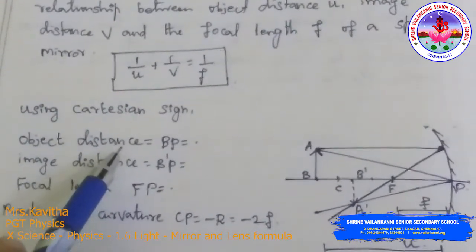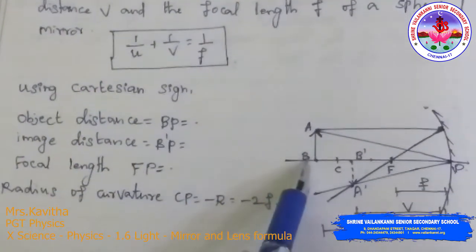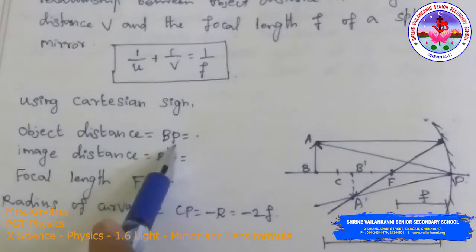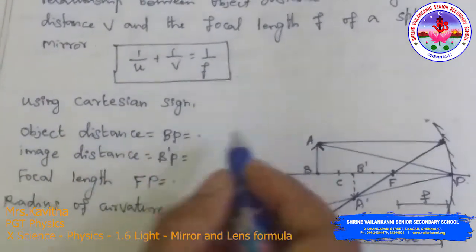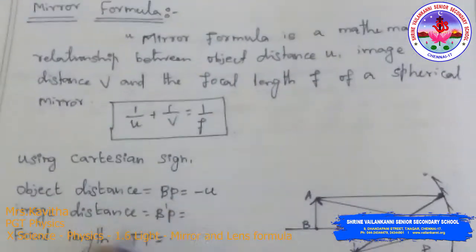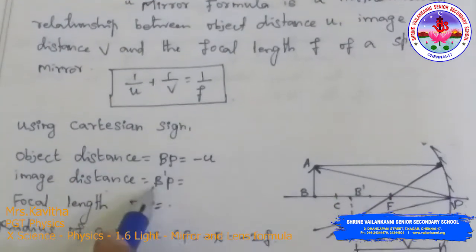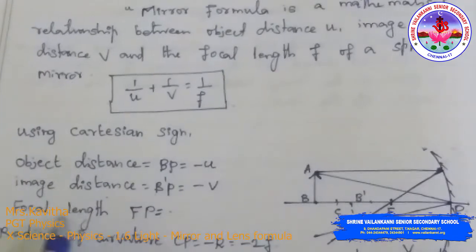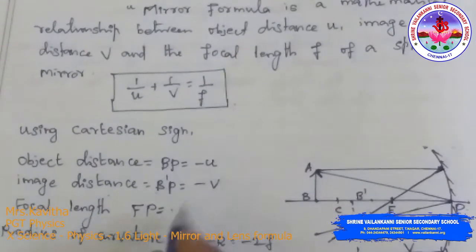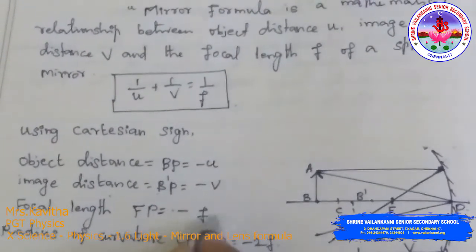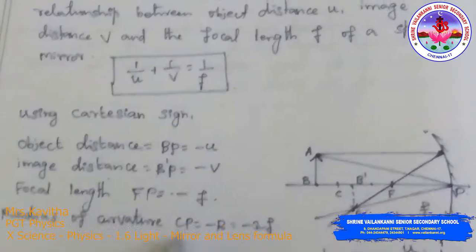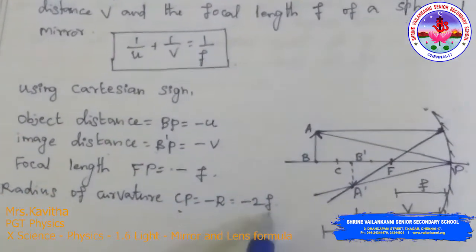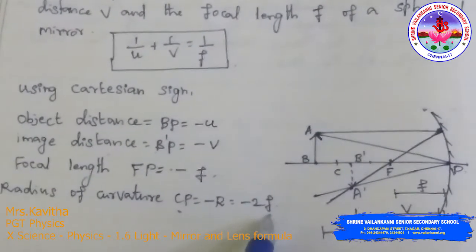By using the Cartesian sign, the object distance U, image distance V, and focal length F in the concave mirror are all negative. So BP = −U, image distance B'P = −V, focal length FP = −F, and radius of curvature CP = −R = −2F.